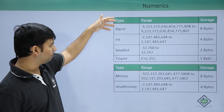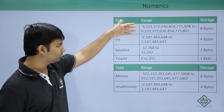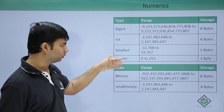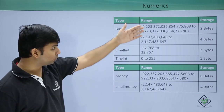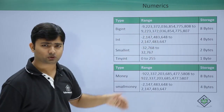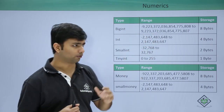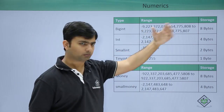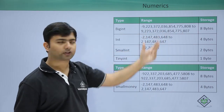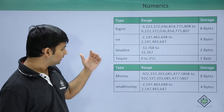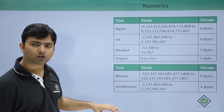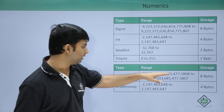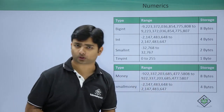As you can see, bigint uses 8 bytes, then 4 bytes, 2 bytes, and 1 byte. You can see the data type, the size, and the range, so you can choose accordingly. If you are sure the number can go very large, you can go for bigint. Similarly, money and smallmoney have different ranges, with their respective storage sizes listed as well.